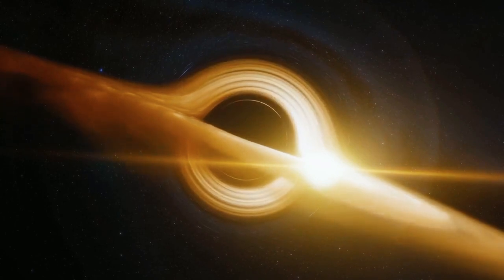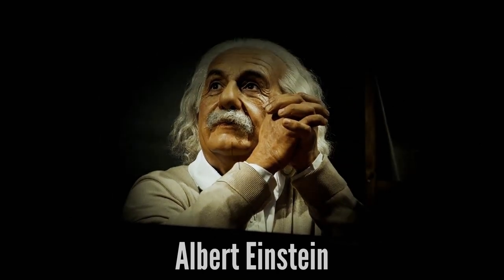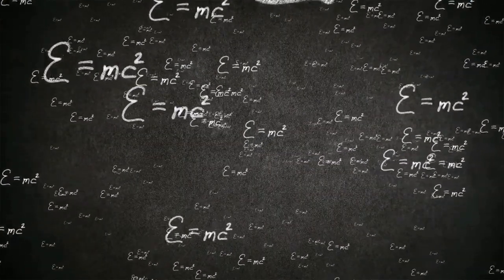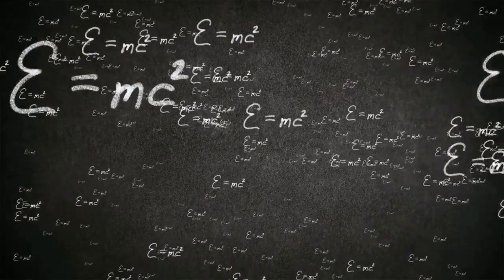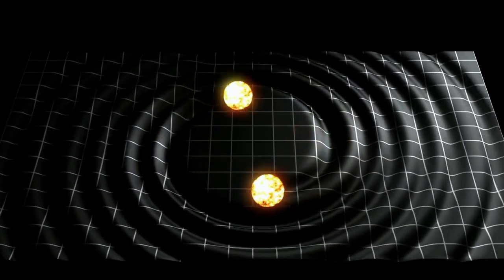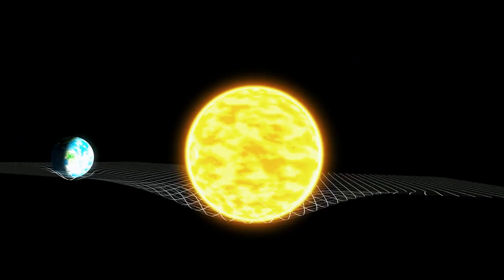Later, the year 1915 was pivotal in the history of science when Albert Einstein developed the theory of general relativity, which changed our view of the cosmos. This theory offered the mathematical basis for understanding the nature of black holes. General relativity describes the link between space and time, matter, and gravity. Massive objects distort space-time, forcing objects to move along curved pathways.